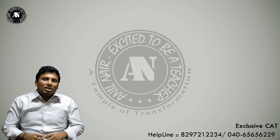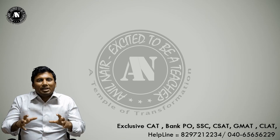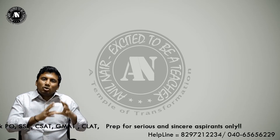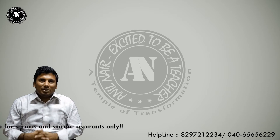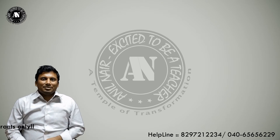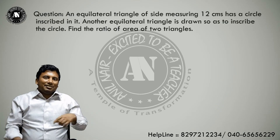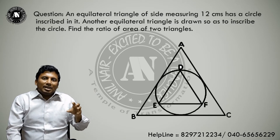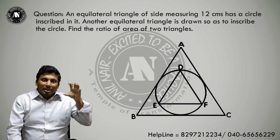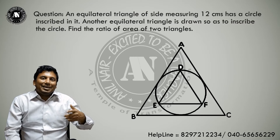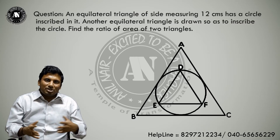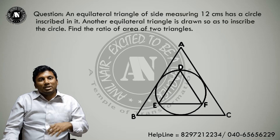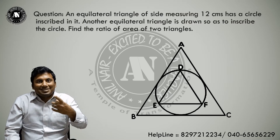Before I discuss this method, let us take a problem, solve it in a traditional way, understand why that method is not the best method to solve certain problems, then we will explore a new method. The question is: there is an equilateral triangle with side 12 cm. In the equilateral triangle, a circle is inscribed. In that circle, another equilateral triangle is inscribed. Find the ratio of the area of the equilateral triangle inscribed in the circle to the area of the equilateral triangle on which the circle is inscribed.